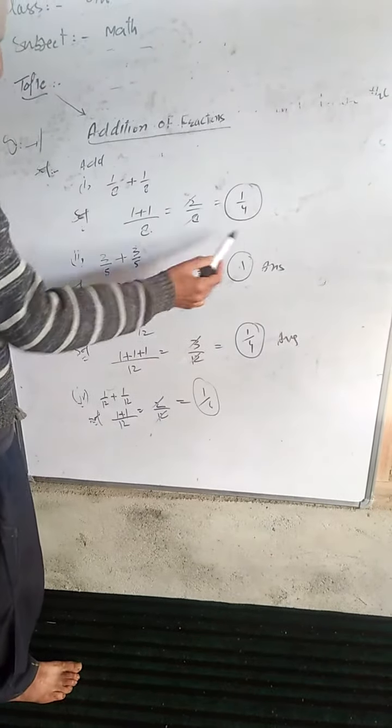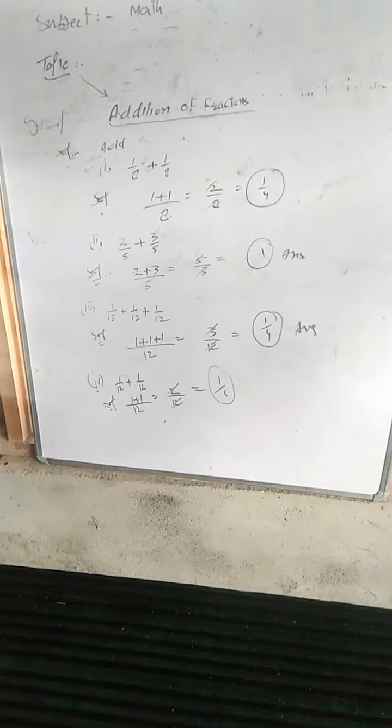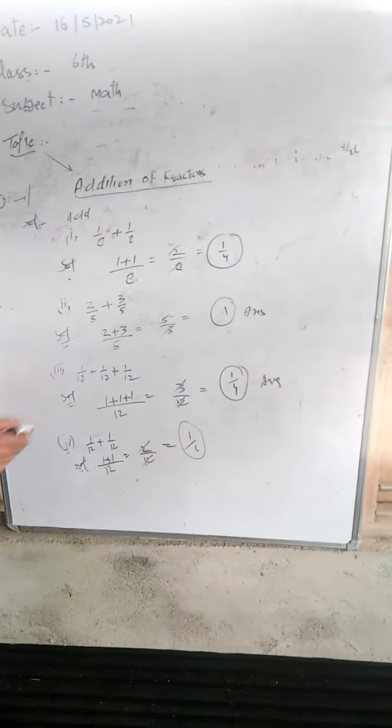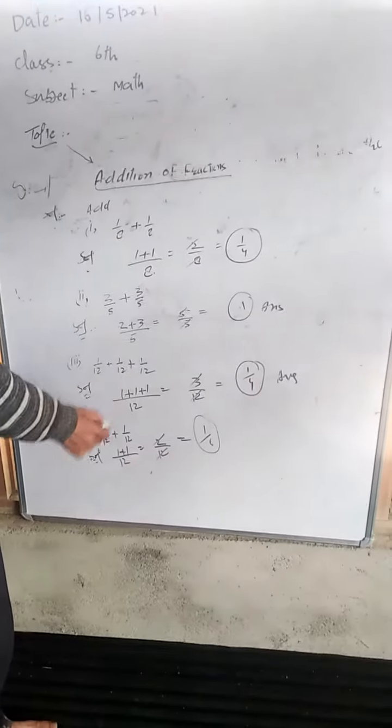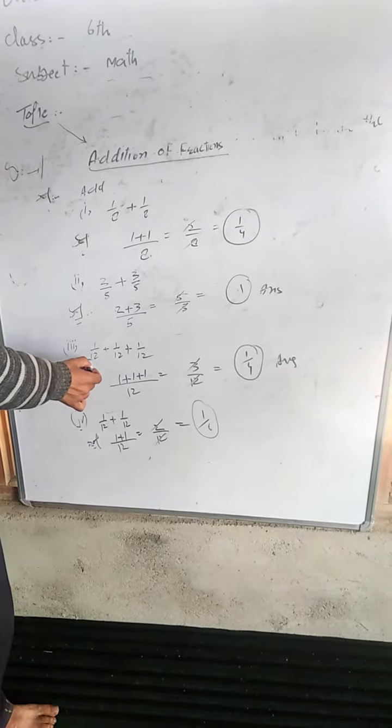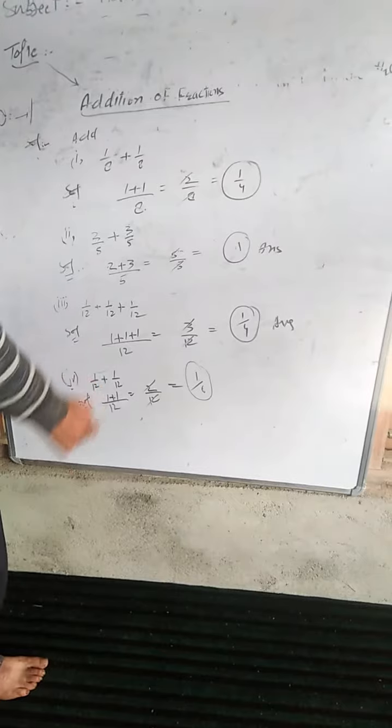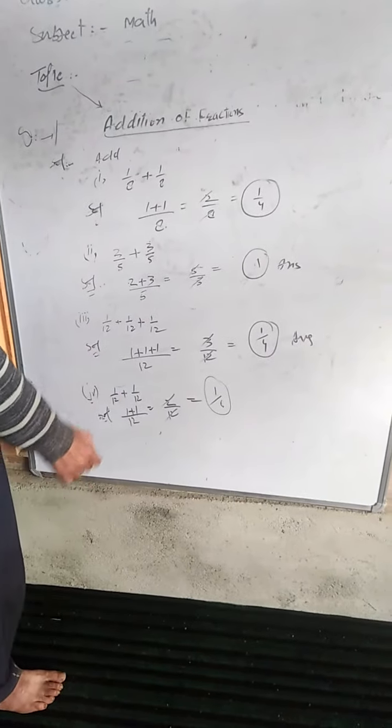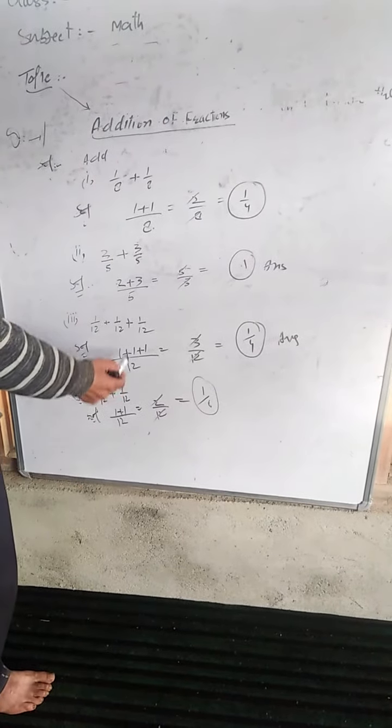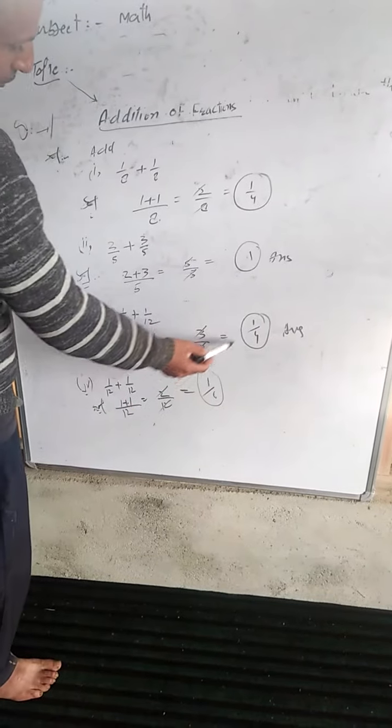Each of these points is one. One by twelve plus one by twelve plus one by twelve. The denominator is the same. You have one plus one plus one over twelve. We have three by twelve, which equals one by four.